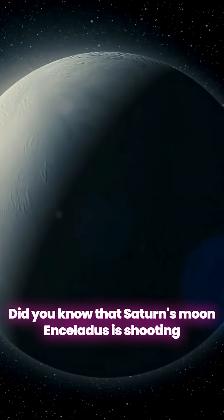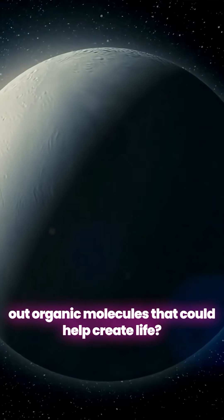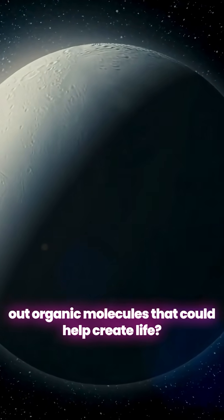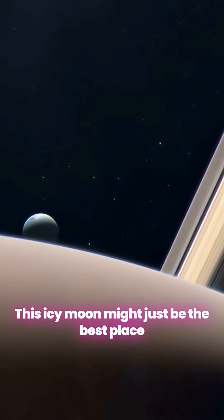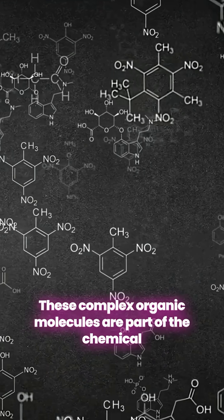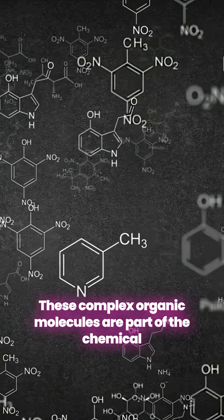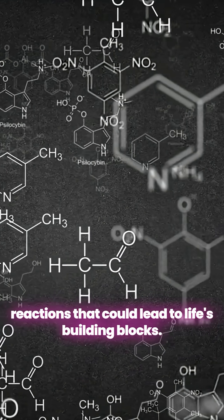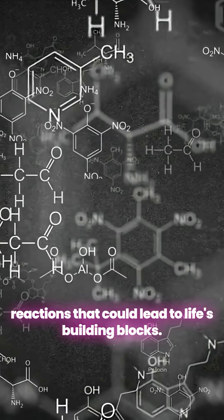Did you know that Saturn's moon Enceladus is shooting out organic molecules that could help create life? This icy moon might just be the best place to search for life in our solar system. These complex organic molecules are part of the chemical reactions that could lead to life's building blocks.